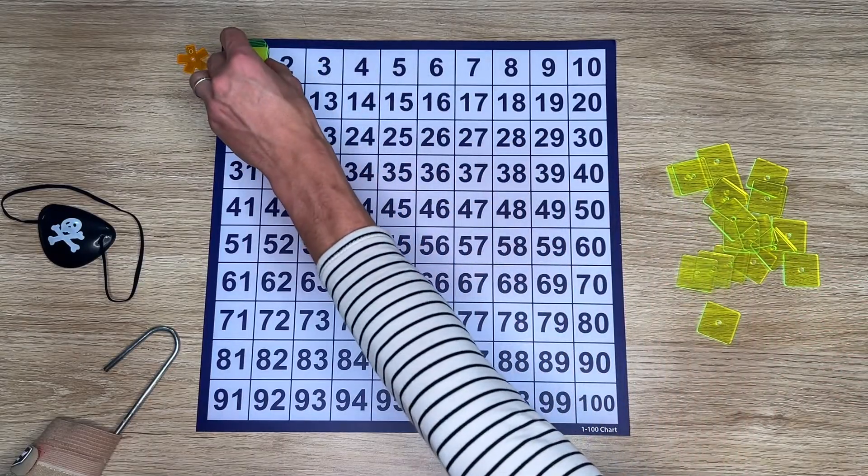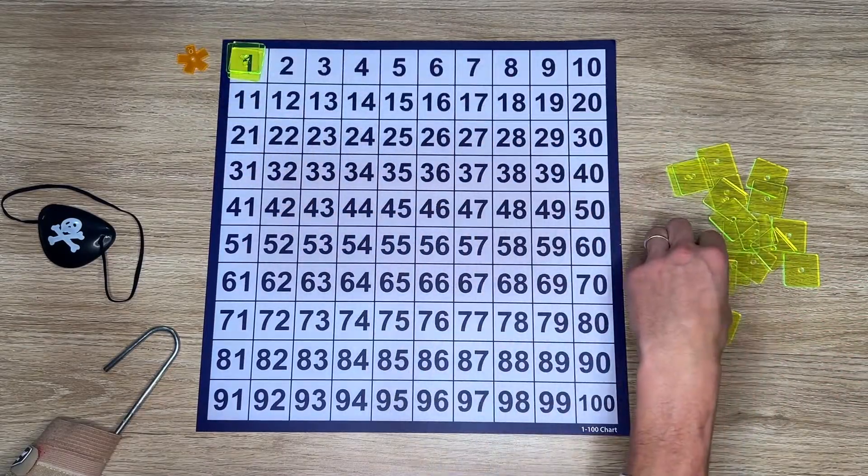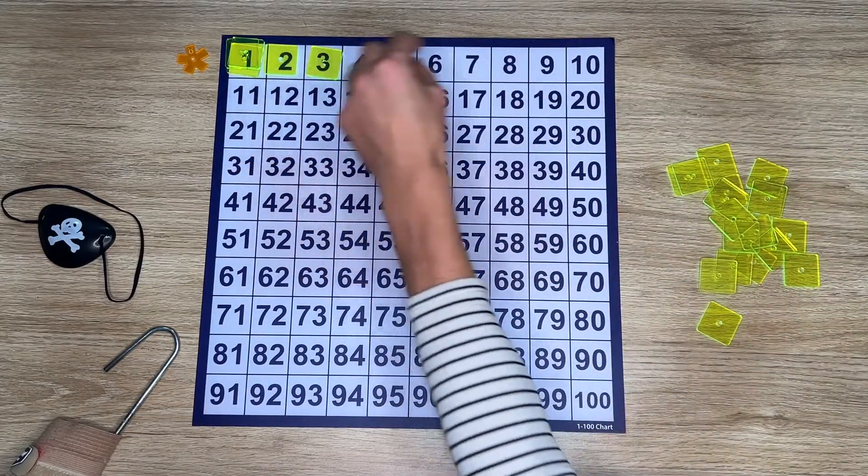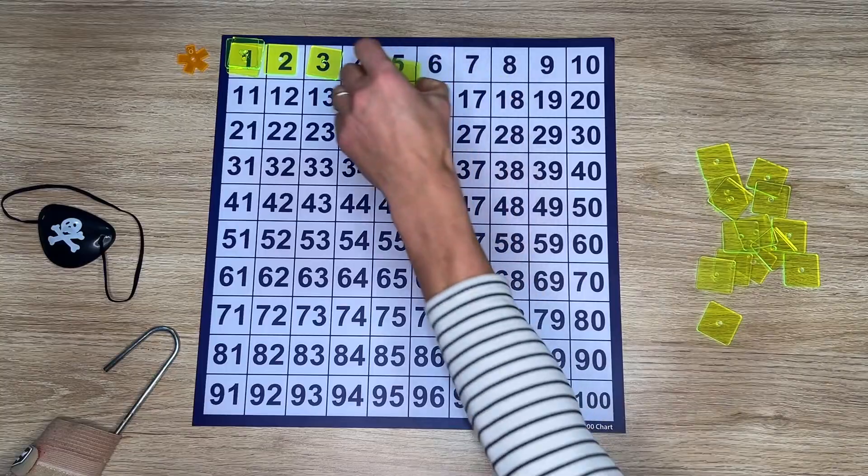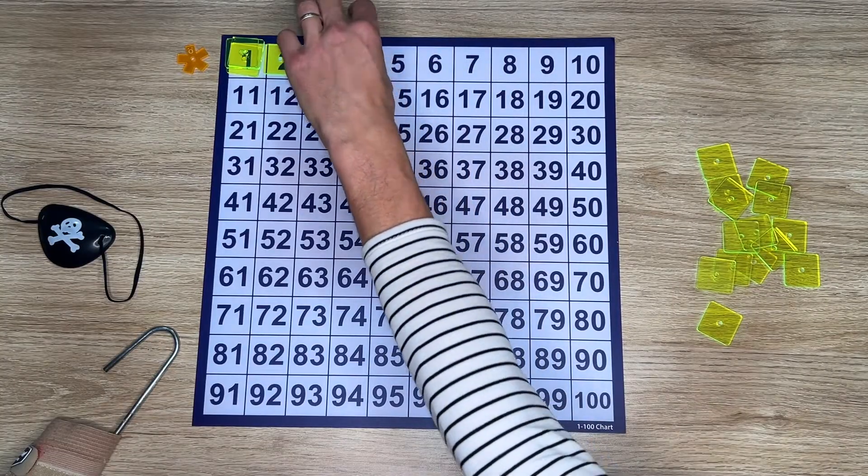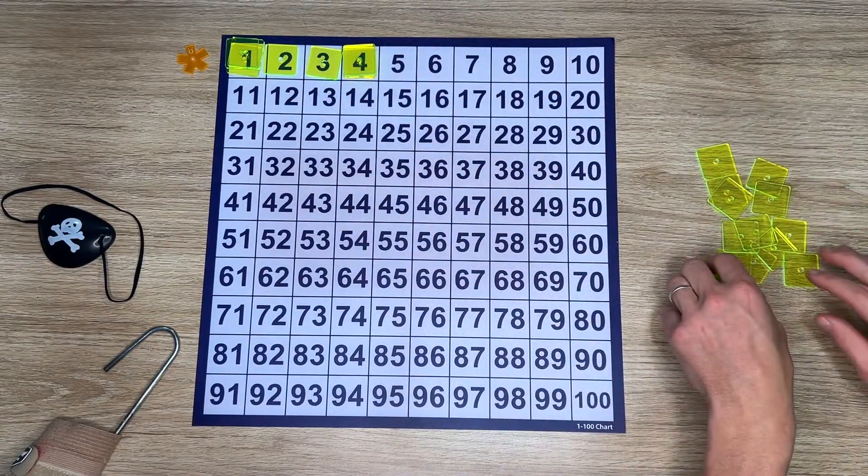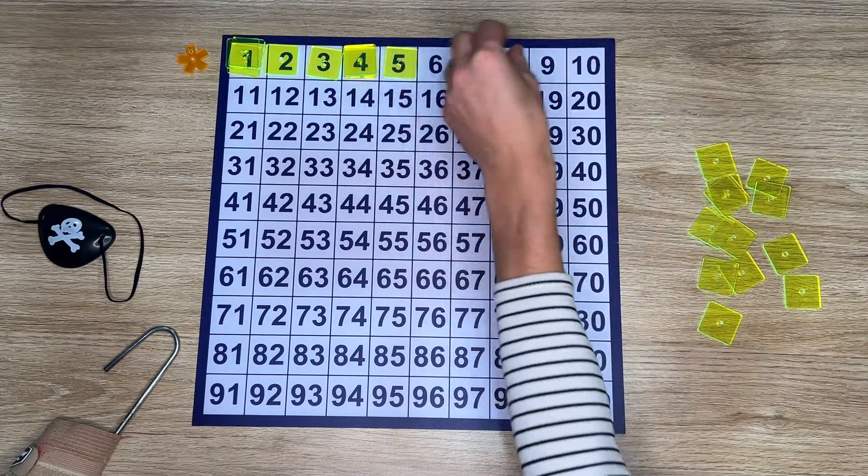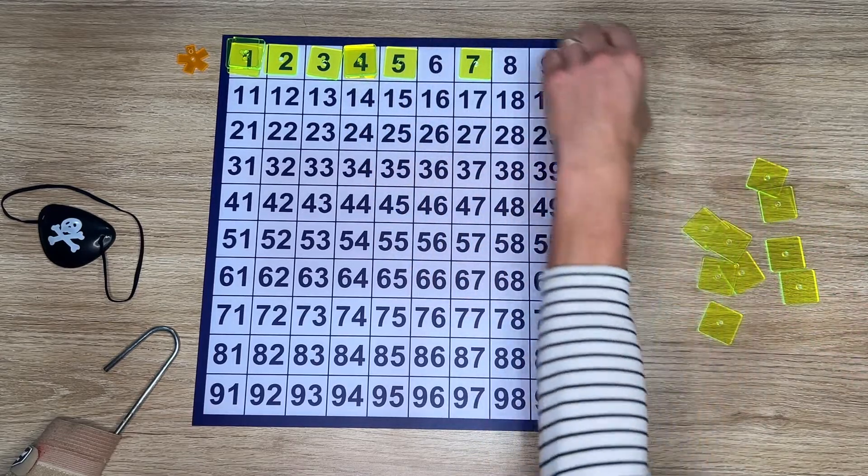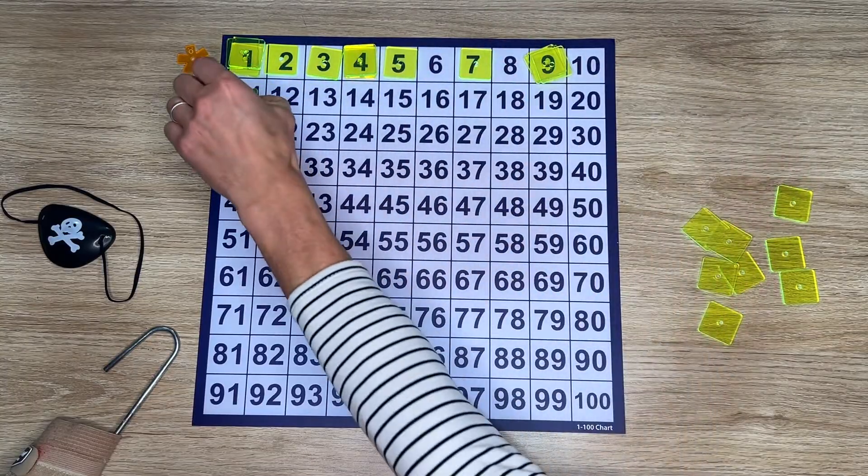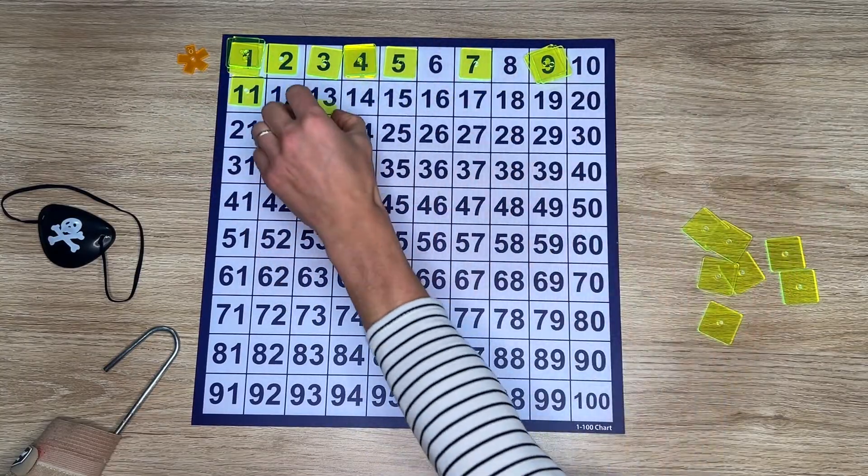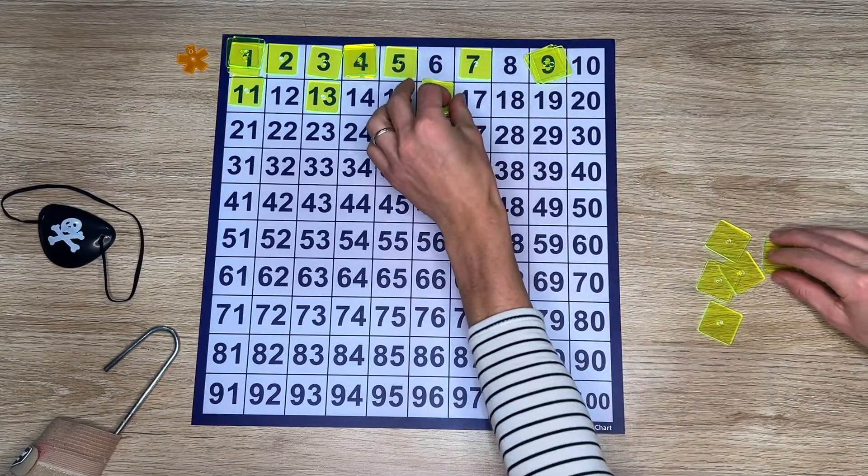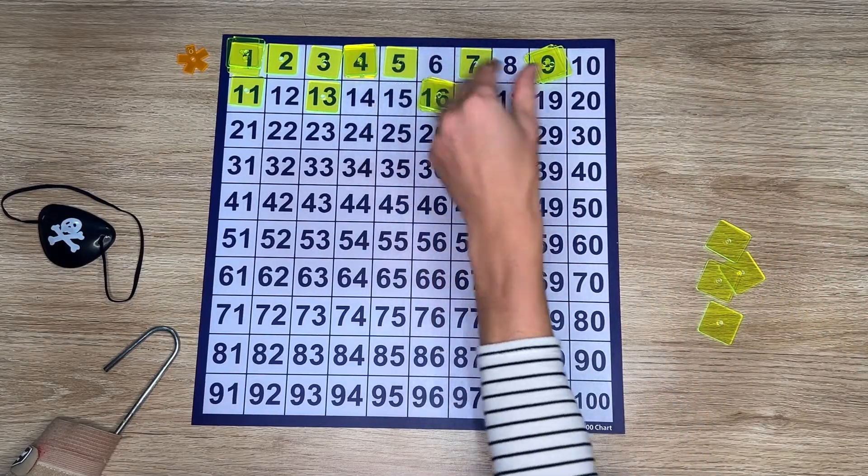So one is a square number so it gets three pieces of treasure. Two is a prime so it gets one. Three is a prime so it gets one. Four is a square number so it gets three. And you might define this with different colours so you might have a colour red representing three or something. Five is a prime. Seven's a prime. Nine's a square. Eleven's a prime. Thirteen's a prime. Sixteen is a square. And on and on.